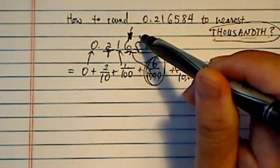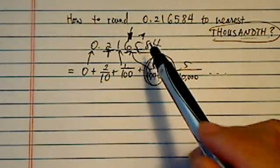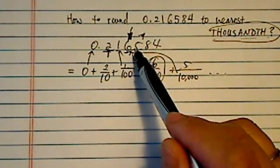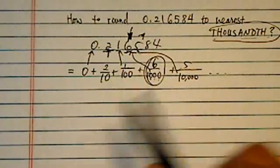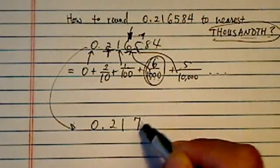Now, then what you're going to do is you're going to take a look at the number that's behind you - I'm trying to draw it here. If the number behind you is 5 or above, then you round up. So this answer becomes 0.217.